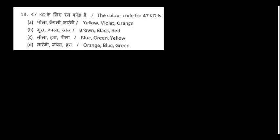The color code of 47 kilo-ohm: four means yellow, then seven is violet. Kilo means we should get orange. So yellow, violet, orange is the color code of 47 kilo-ohm.